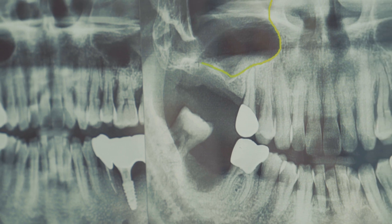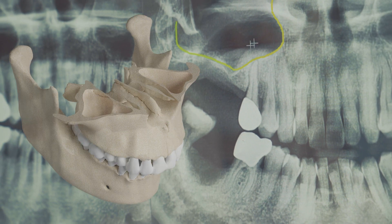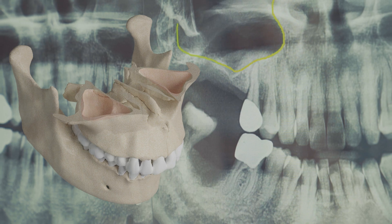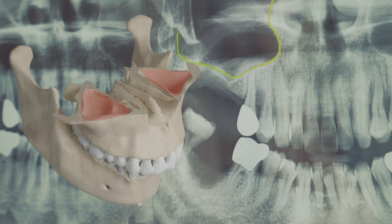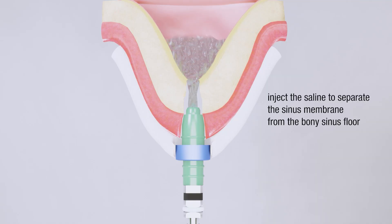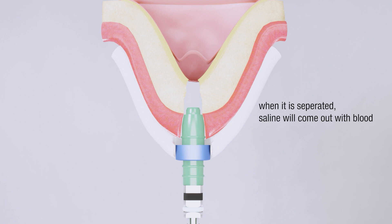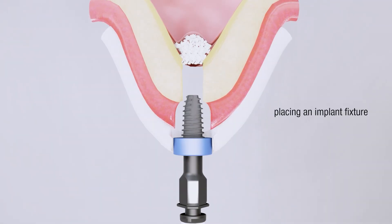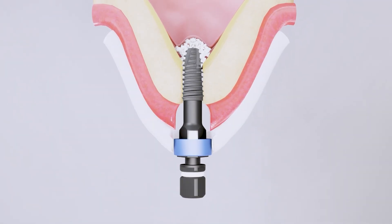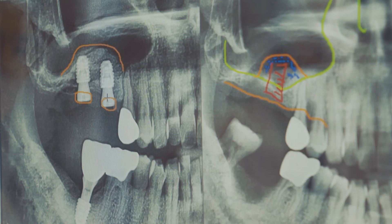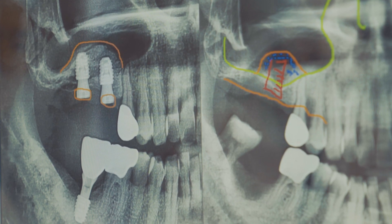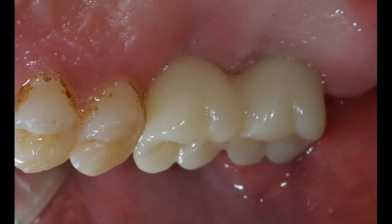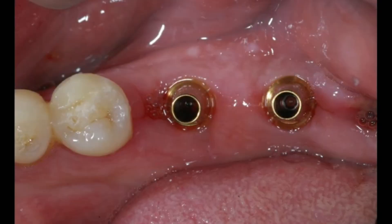Another type of dental implant surgery is a sinus lift. This is a procedure done when there isn't enough bone in the upper jaw to support a dental implant. During a sinus lift, the sinus membrane is lifted and bone grafting material is added to the jawbone to create a more stable base for the implant. Sinus lifts are typically done in conjunction with dental implant surgery and can help ensure a successful outcome.